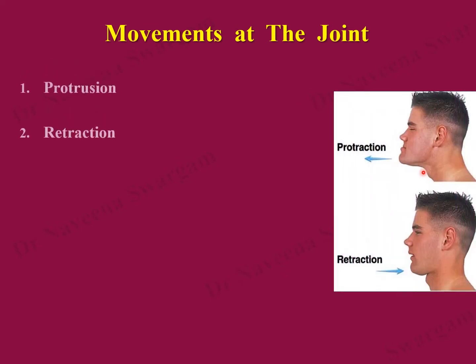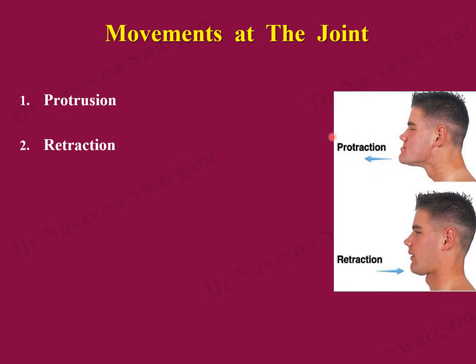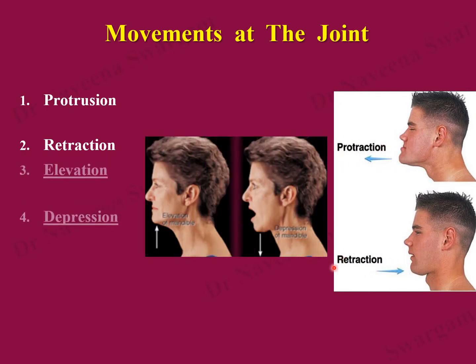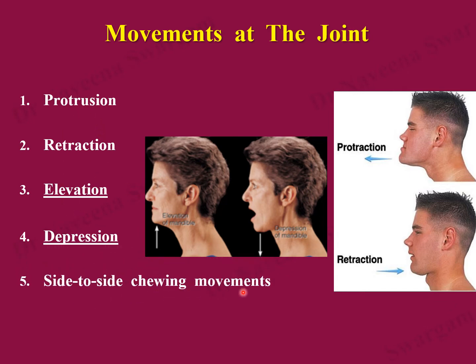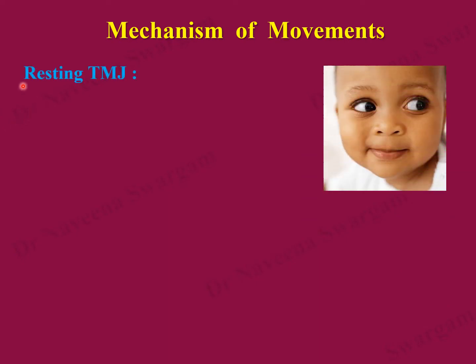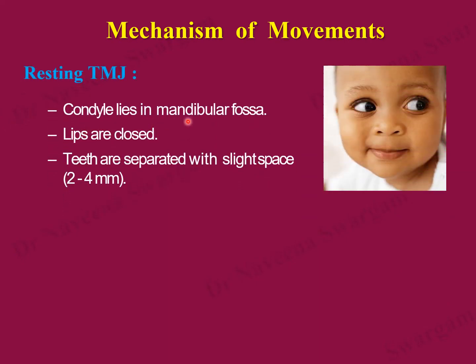Both temporomandibular joints produce movements of the mandible: forward movement known as protraction, backward movement known as retraction, upward movement known as elevation causing closure of the mouth, downward movement known as depression causing opening of the mouth, and a combination of all movements producing side-to-side chewing movements.